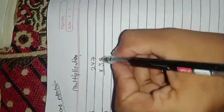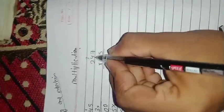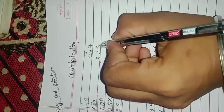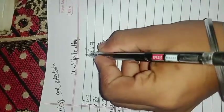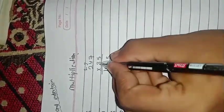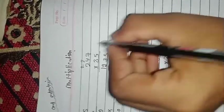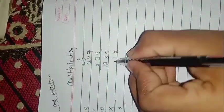Next example: 475 times 35. 5 times 5 is 25, 5 and 2 carry. 7 times 5 is 35, 35 and 2 is 37, 2 carry. 4 times 5 is 20, 20 and 3 is 23, 2 carry. 5 times 3 is 15, 1 carry.